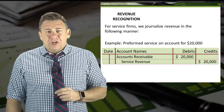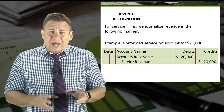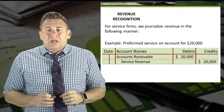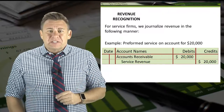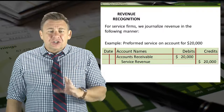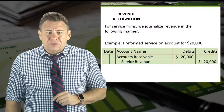For service firms, we record revenue by debiting accounts receivable — in this example it could also be cash in some cases — and crediting service revenue for $20,000.